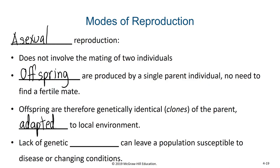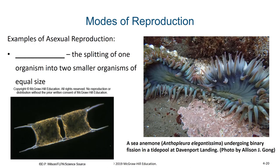With asexual reproduction, there will be a lack of genetic variability, and this lack of genetic variability can leave a population susceptible to disease or changing conditions. One example of asexual reproduction is one organism dividing into two organisms — we call this fission. Fission can happen at the single cell level, and in fact, most cell division is fission.